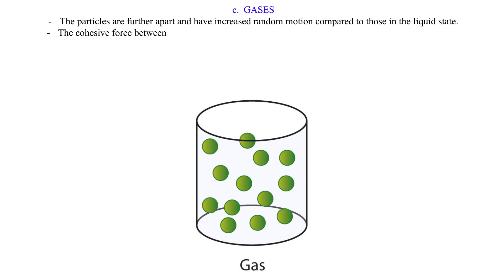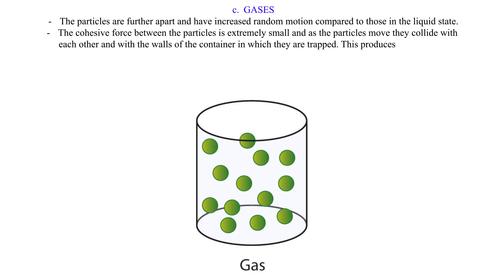The cohesive force between the particles is extremely small and as the particles move they collide with each other and with the walls of the container in which they are trapped. This produces gas pressure.